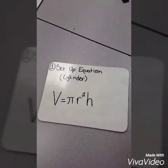Our first step is setting up the equation for a cylinder. The volume equals πr²h.